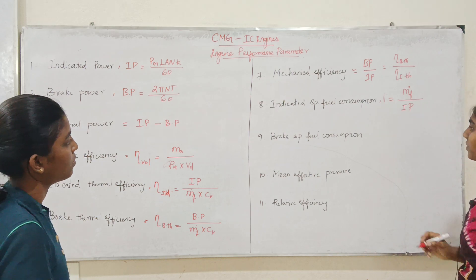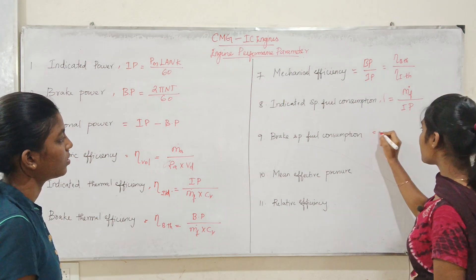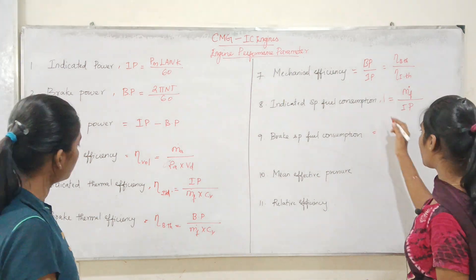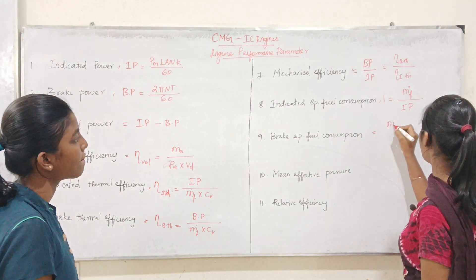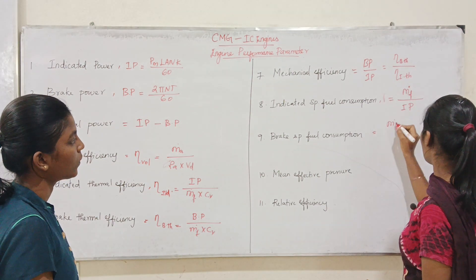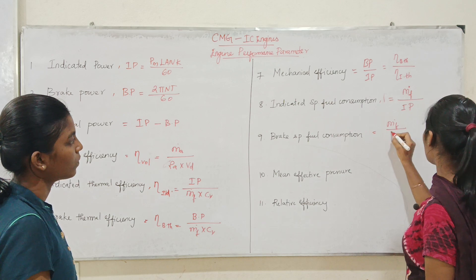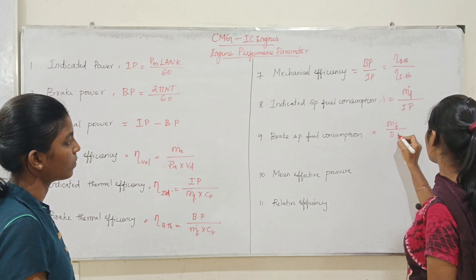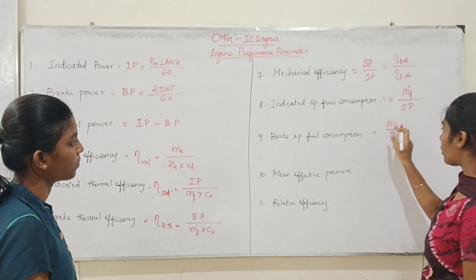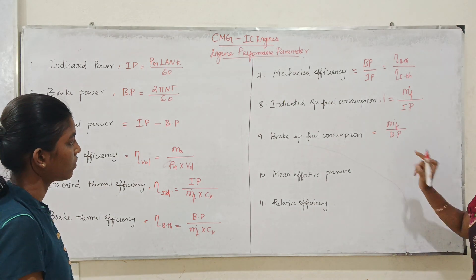Next, Brake Specific Fuel Consumption. Brake specific fuel consumption is equal to m_f_dot divided by BP, that is mass flow rate divided by brake power.